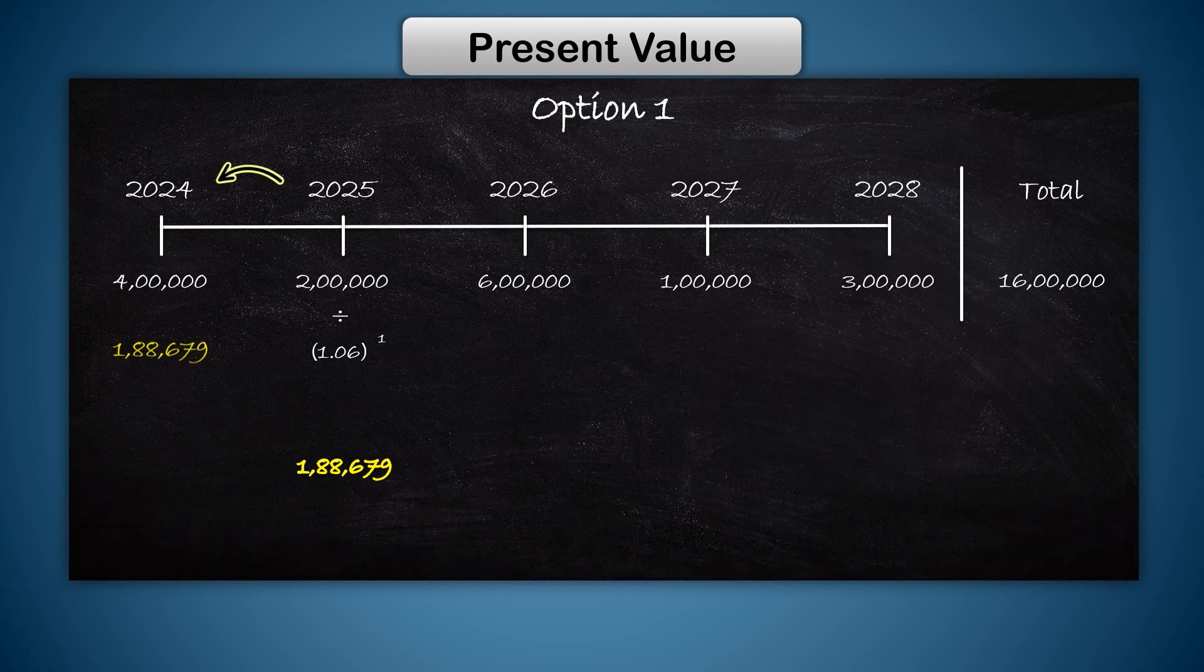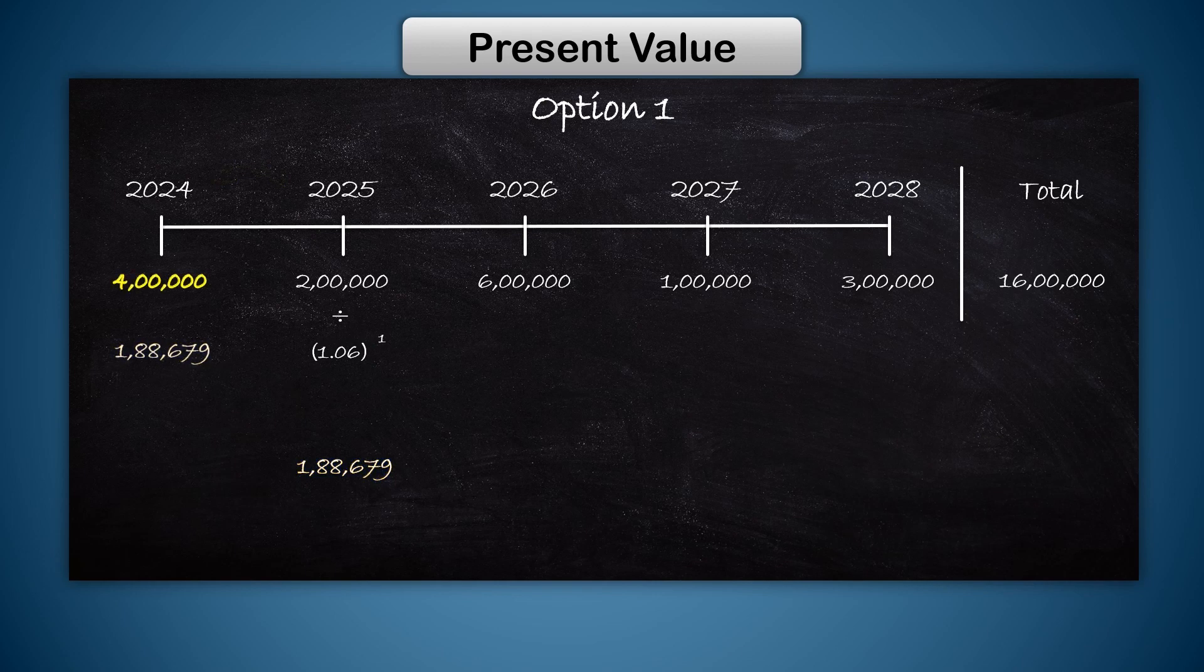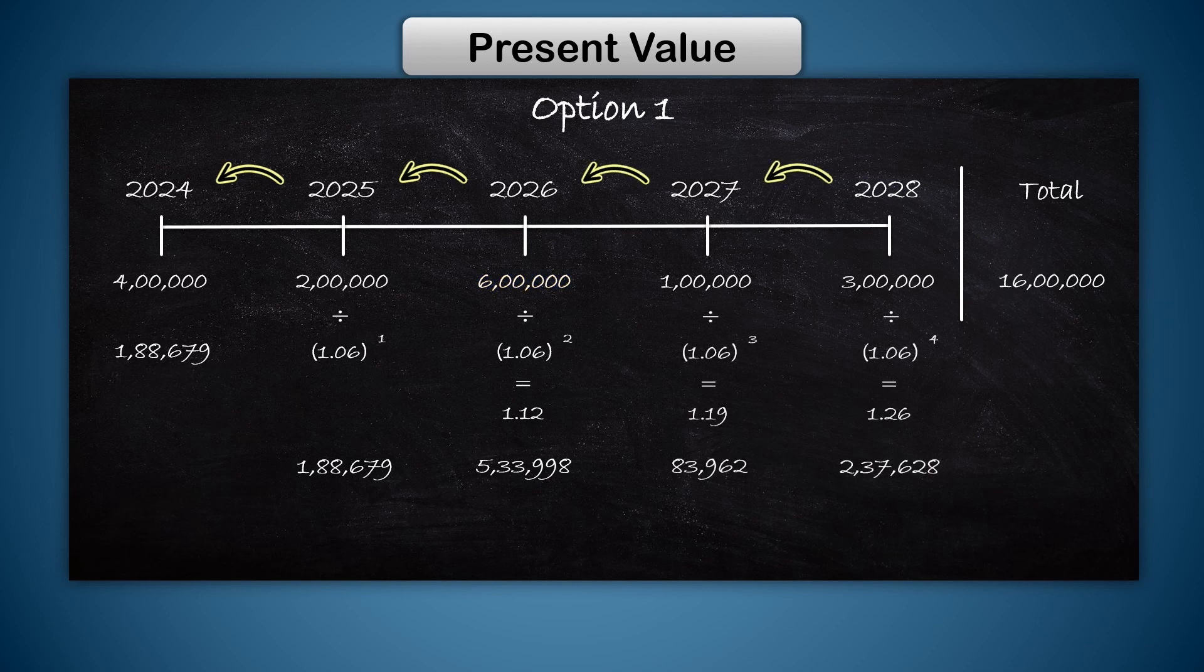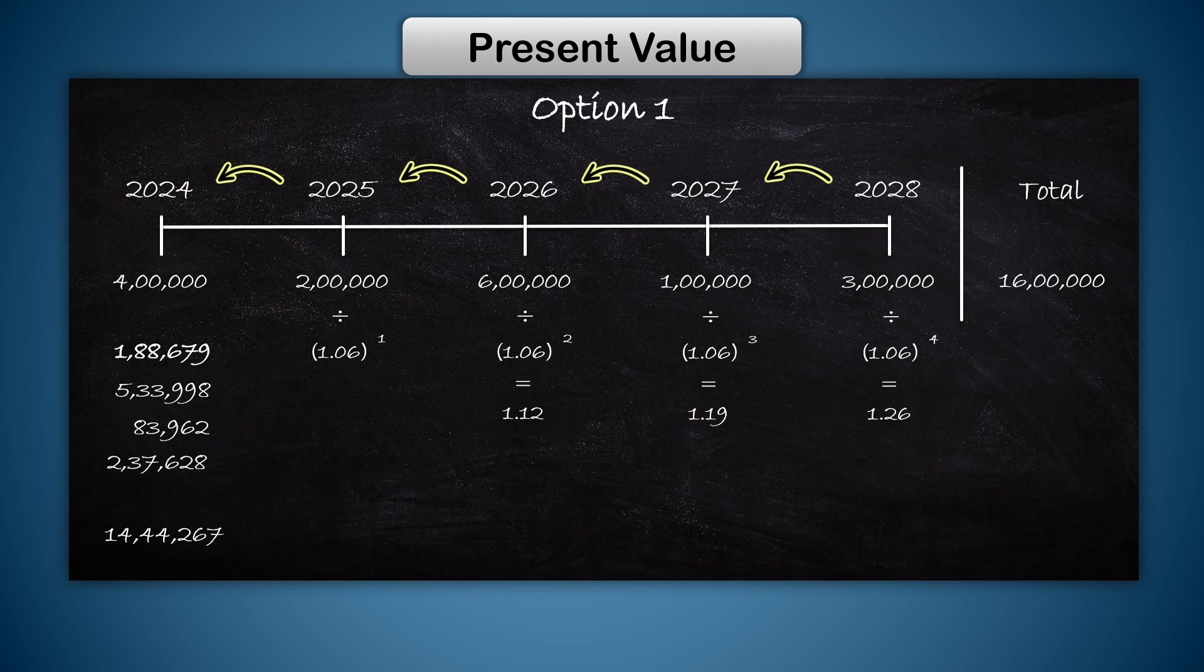This amount does not require any adjustment as it is already in 2024 terms. This will have to be discounted twice to take it from 2026 to 2024, so divided by 1.06 to the power 2. If we discount these amounts for 3 and 4 years and add them all up, we get 14 lakh 44,267.